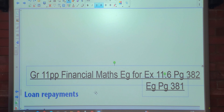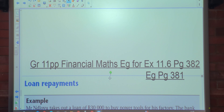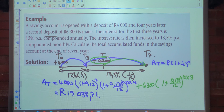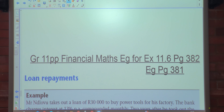Alright, that's the only example. With that you should be able to do Exercise 11.6, the odd numbers on page 382 for homework. Now we're going to go into the homework from yesterday and mark those odd numbers.